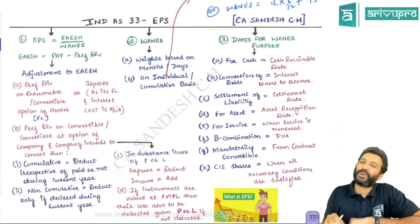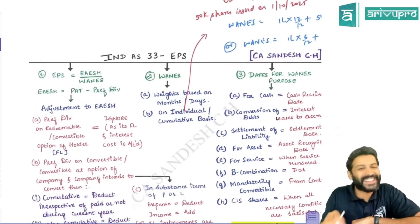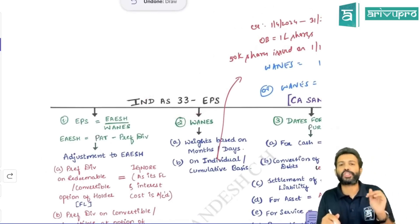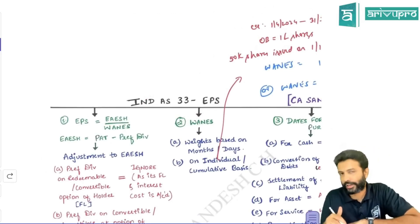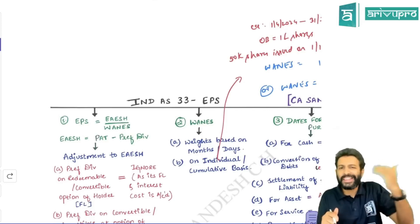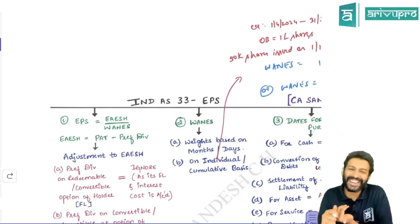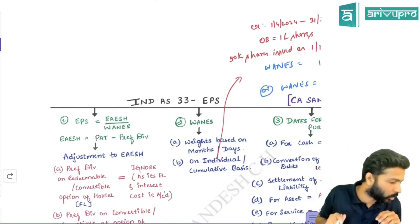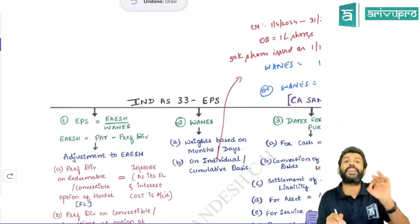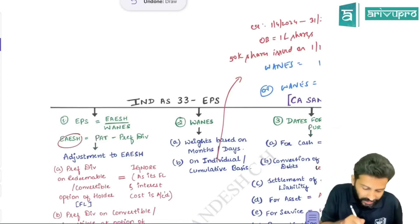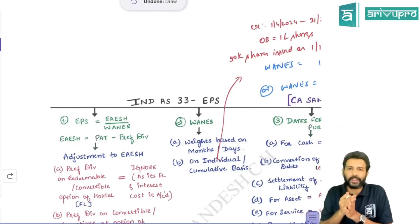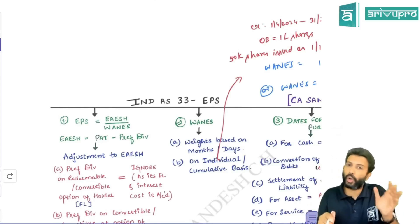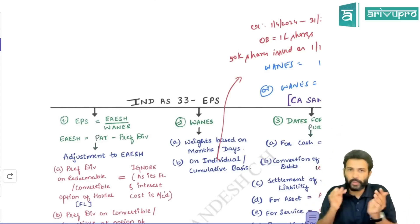Let's get started with the next revision topic, Ind AS 33, which talks about earnings per share. EPS is given by the formula: EISH divided by WANES. EISH stands for earnings available to equity shareholders, or earnings attributable to equity shareholders, divided by weighted average number of equity shares. EISH is nothing but profit after tax minus preference dividend.